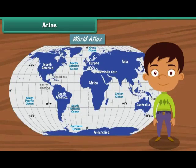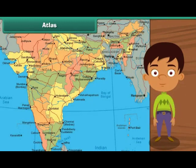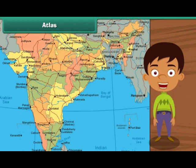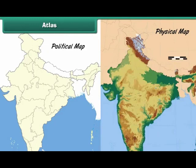An atlas is a collection of maps and charts. The maps in an atlas give geographical information about different parts of the world. The charts in an atlas contain details of specific locations such as population, sea levels, crops produced, etc. Maps are of two types: political and physical. Let us learn about them in detail.